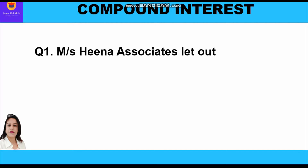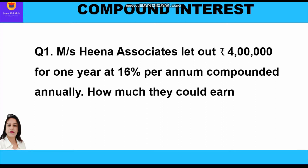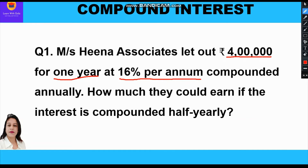Let's start with the first question. Messrs Hina Associates let out rupees 4 lakh for one year at 16 percent per annum compounded annually. How much could they earn if the interest is compounded half-yearly? So Hina Associates is letting out rupees 4 lakh, so 4 lakh is our principal. The time period is one year, rate of interest is 16 percent per annum, and we have to find the interest compounded half-yearly.